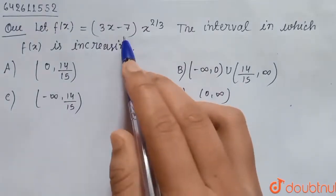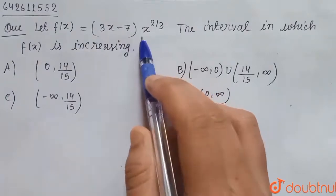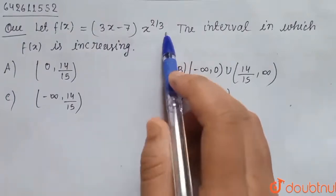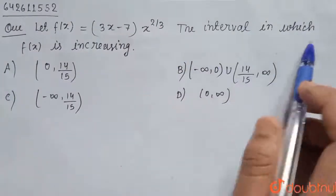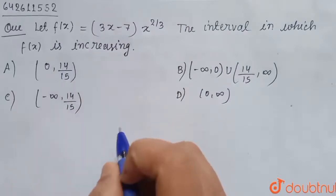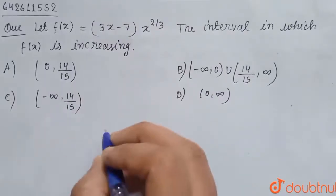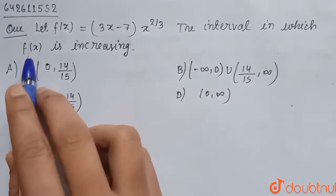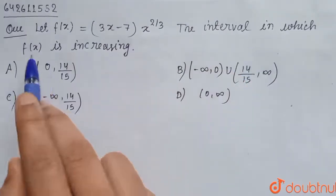The question is: let f(x) = (3x - 7)^7 · x^(2/3). Find the interval in which f(x) is increasing. So here we know that we have to check the interval in which f(x) is increasing.